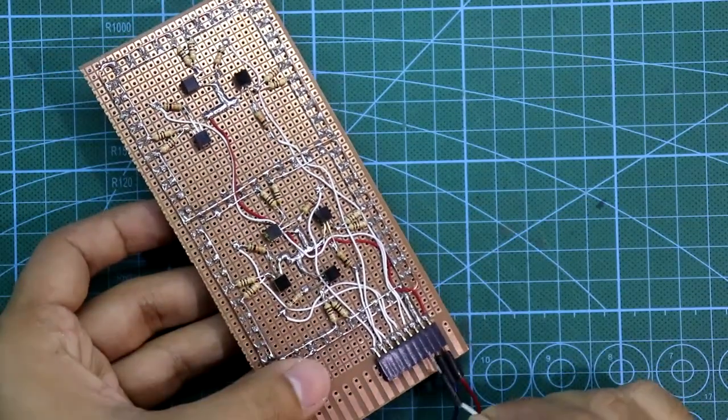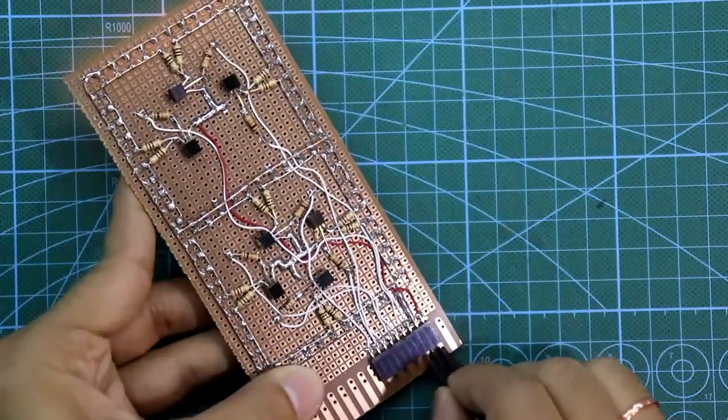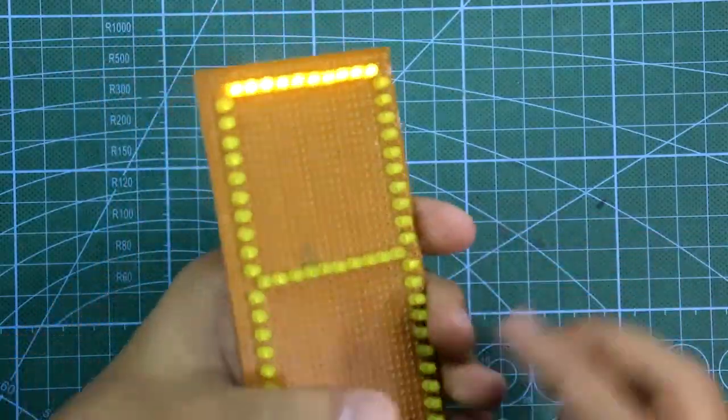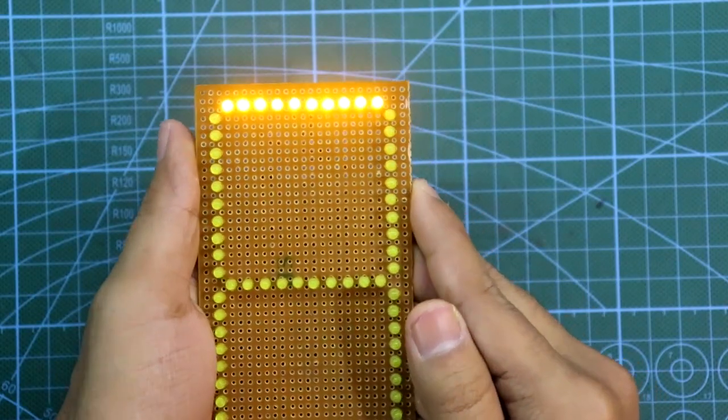And signal to the pin number 3. That is segment A. Now segment A should glow. And it is glowing.